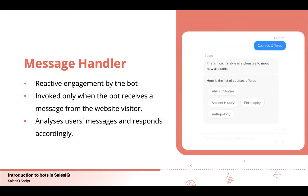Next is the message handler. This handler manages the process of reactive engagement by the bot, meaning it is only invoked when the bot receives a message from the website visitor. The combination of messages received from the visitor is analyzed, stored in the code, and then the bot responds to the visitor's questions based on available answers. The best example is a call center — you call a support center, tell the representative you have trouble with something, and they respond with a solution. They don't voluntarily call you. That's how the message handler functions.